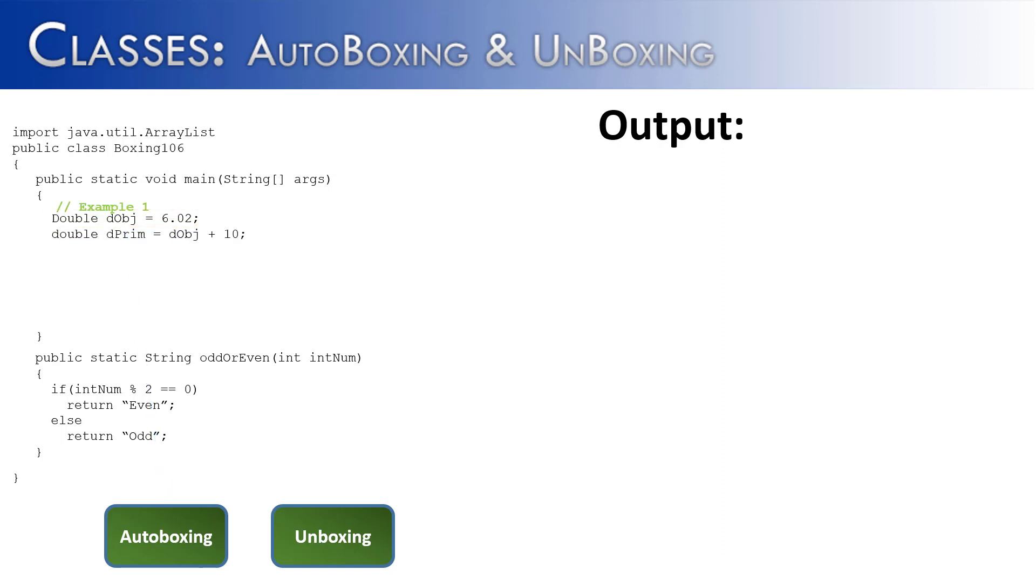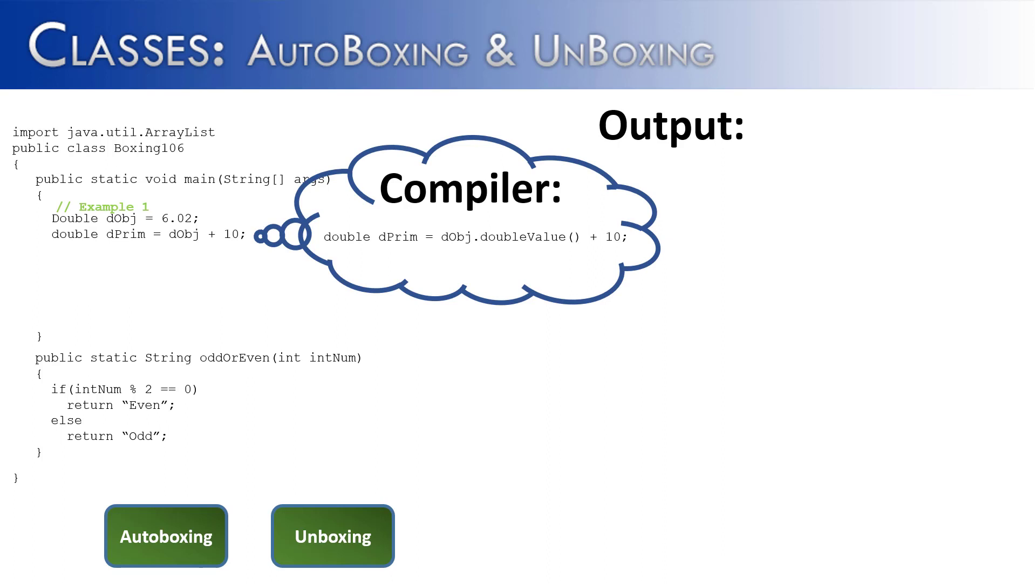Now on the next line I've done something interesting. I have a double primitive DPRM and it's going to equal DOBJ plus 10. Well something that you probably don't know about a double object is that it cannot be added to 10. The plus operator does not work on objects. So guess what has to happen in order for 10 to be added to DOBJ? It has to unbox that DOBJ which it will do automatically. It's going to unwrap DOBJ and find the primitive 6.02 inside and then add it to 10. And that is unboxing. And once that's done, we're going to get that value stored inside of DPRM which is then going to output and be 16.02.